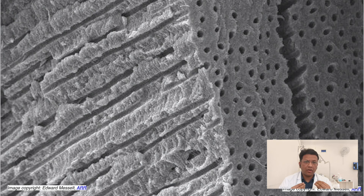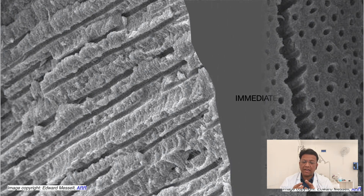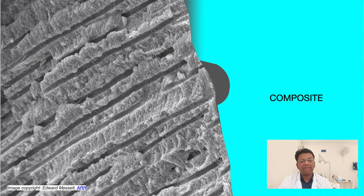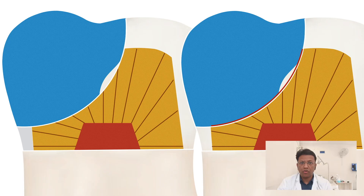On the contrary, if before placing my composite increment I first seal the dentine, then even if I leave an air void behind, the patient is not going to experience pain. The dentinal tubules are already sealed, so even if a tiny vacuum chamber remains, no movement of dentinal fluid occurs because there are no pressure changes — the openings of the dentinal tubules are already sealed.